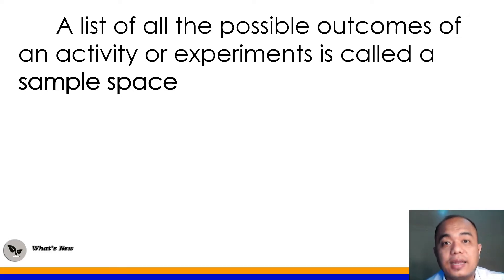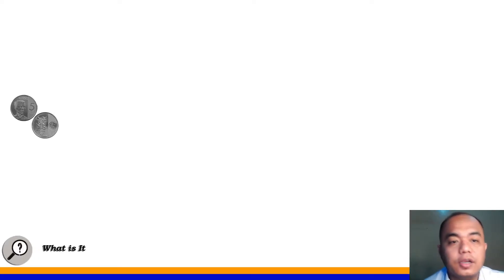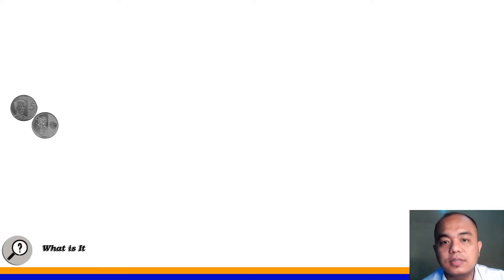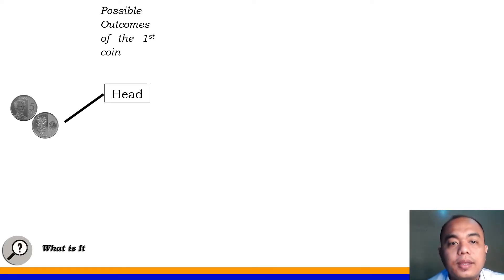Sample space ang tawag natin sa lahat na mga possibility na makukuha natin in performing a certain event. There are common ways that can be used in recording possible outcomes in an experiment. Let's solve the problem given earlier. We have here two coins being tossed. Paano natin i-record yung possible outcomes na pwedeng mangyari while we toss the coins? Let's consider this. We have here the possible outcomes of the first coin. Sa una pa lang na coin, pwede tayong makakuha ng head at saka tail. For one coin pa lang.